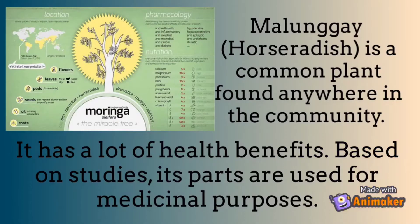Malunggay, or horseradish, is a common plant found anywhere in the community. It has a lot of health benefits. Based on different studies, its parts are used for medicinal purposes.